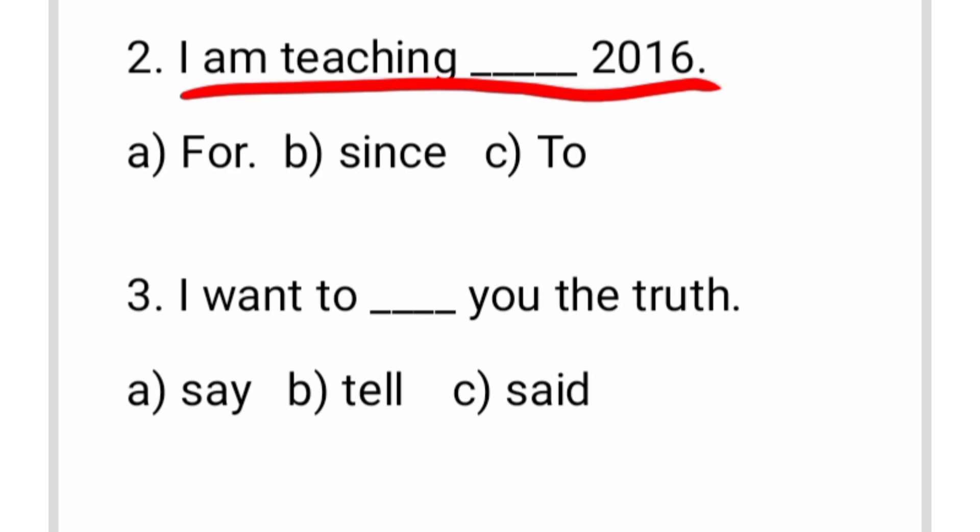The third question is: I want to dash you the truth. The three options are: 'say', 'tell', and 'said'. 'Say' won't work because the sentence is in general present tense. 'Said' won't work because the sentence is in present tense, not past. We use 'tell' because when both a speaker and a receiver are mentioned in the sentence — as in 'I want to tell you' — we use 'tell'. Both persons are mentioned, so the answer is 'tell'.